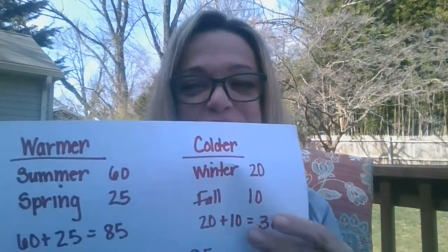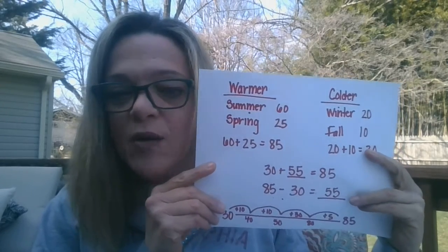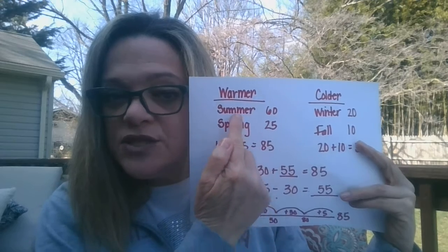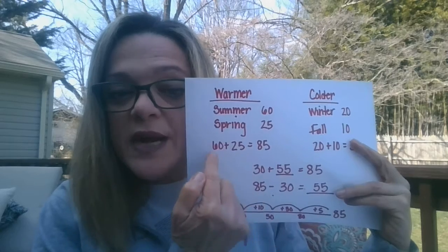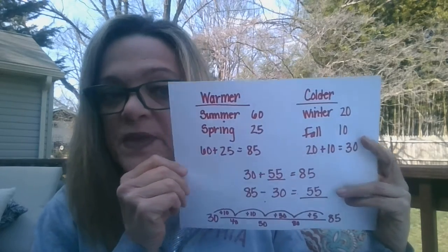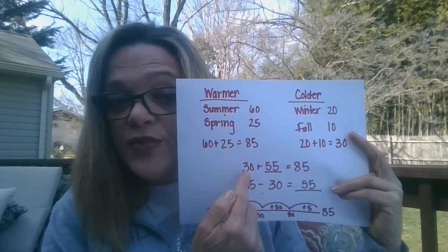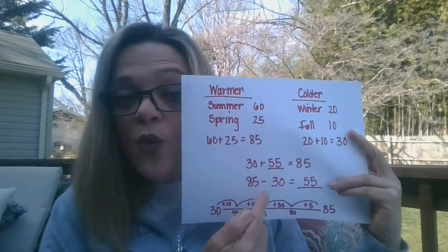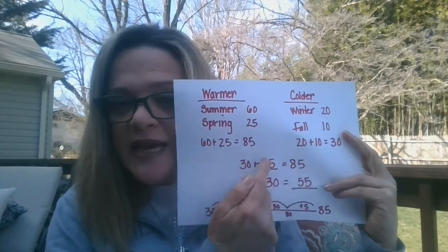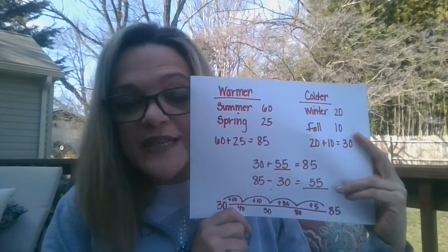My next question is: did students choose warmer or colder seasons as their favorite, and how many more? So my warmer seasons are summer and spring. Summer had 60 students, spring had 25. When I added that together, I got 85 total students. The colder seasons are winter and fall — 20 and 10. When you add 20 and 10, you get 30. Then I wanted to know how many more. I could have started at 30 and asked how many I needed to add to get to 85, or I could start with 85, take away 30. Either way, I got the exact same answer — 55 more students.